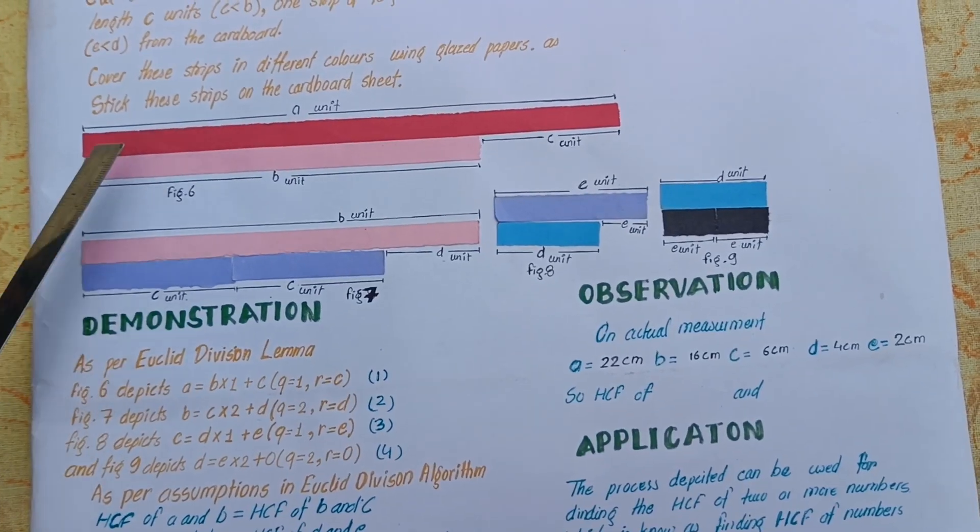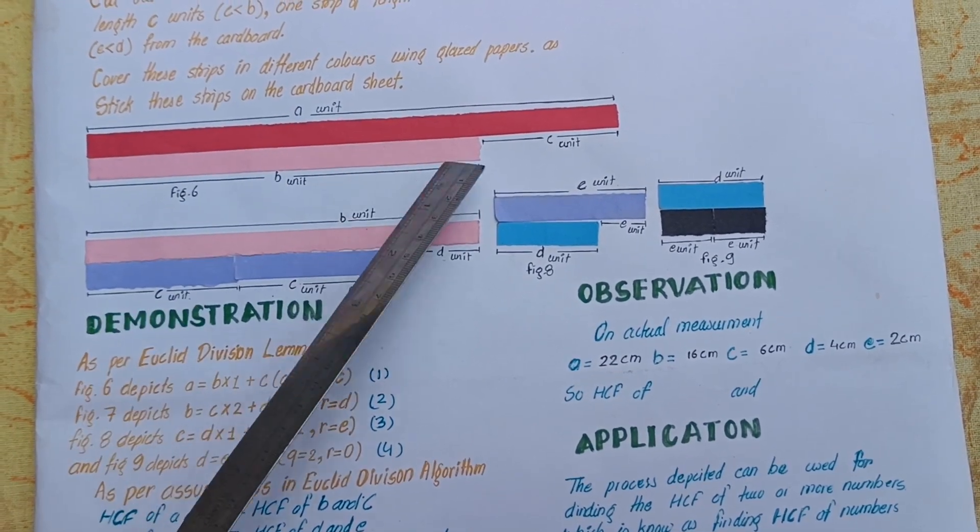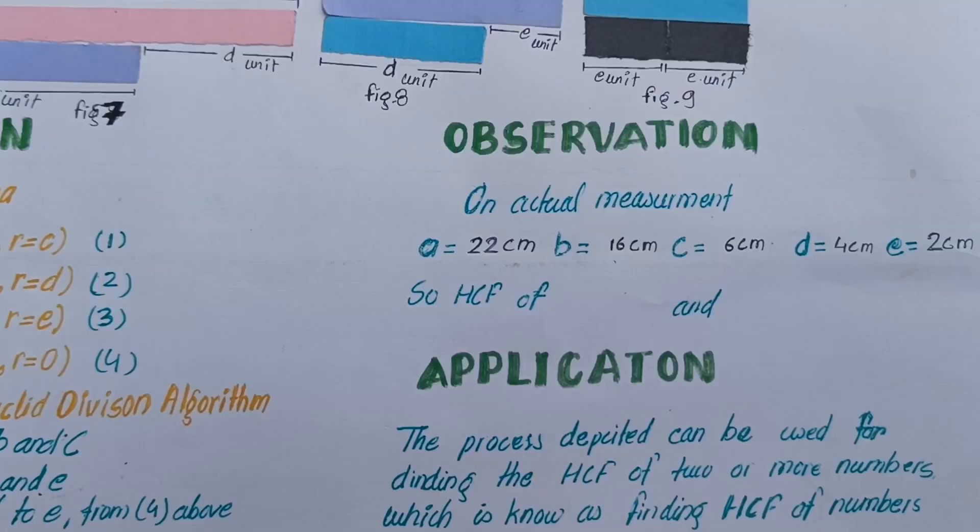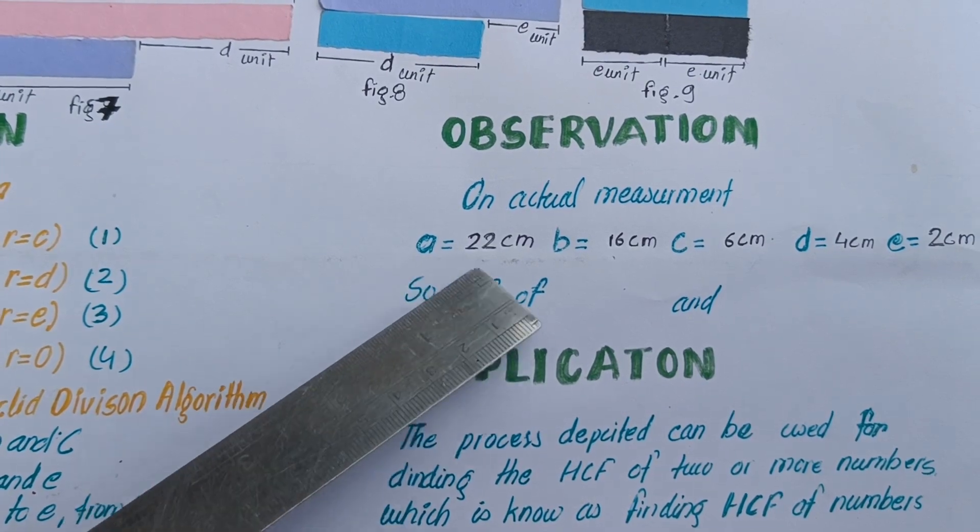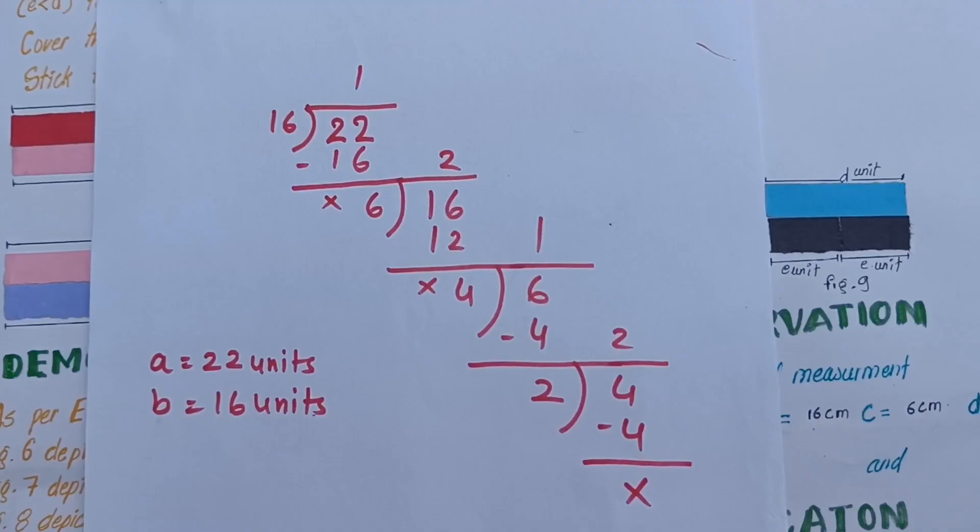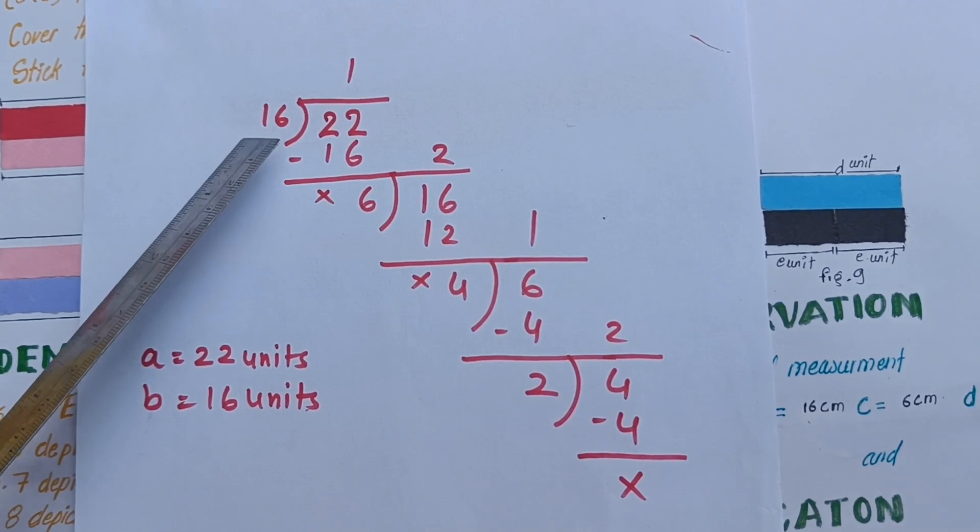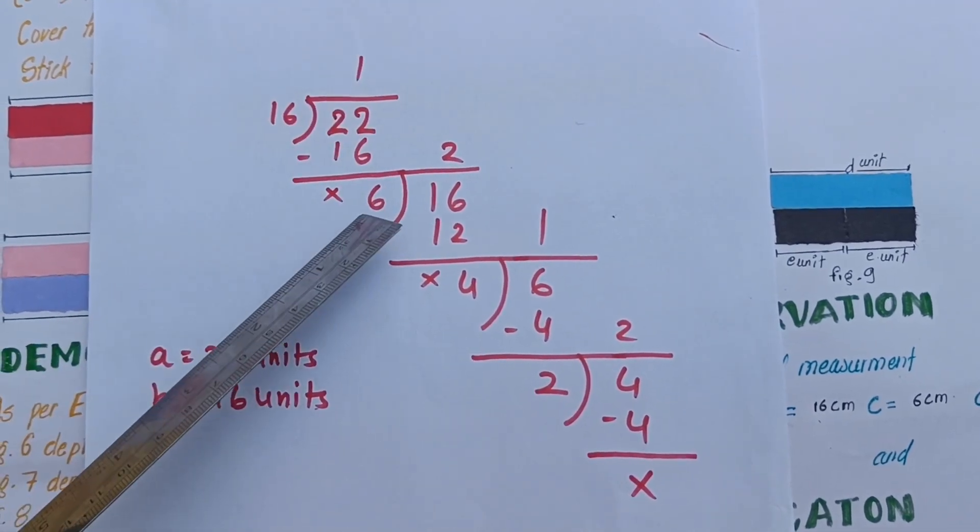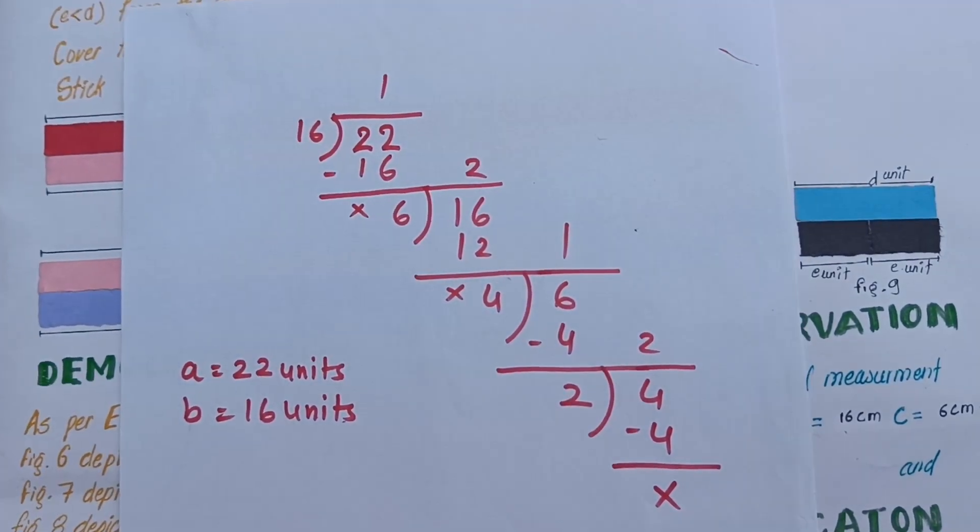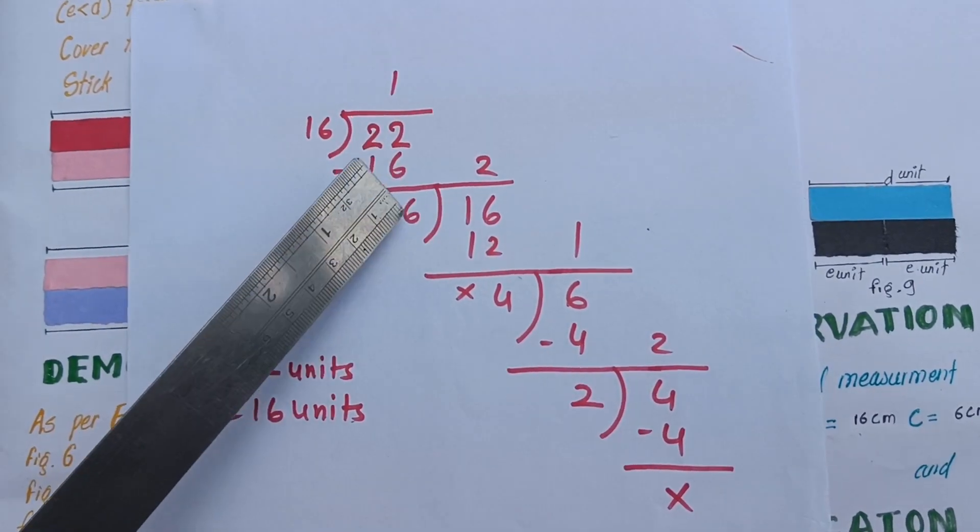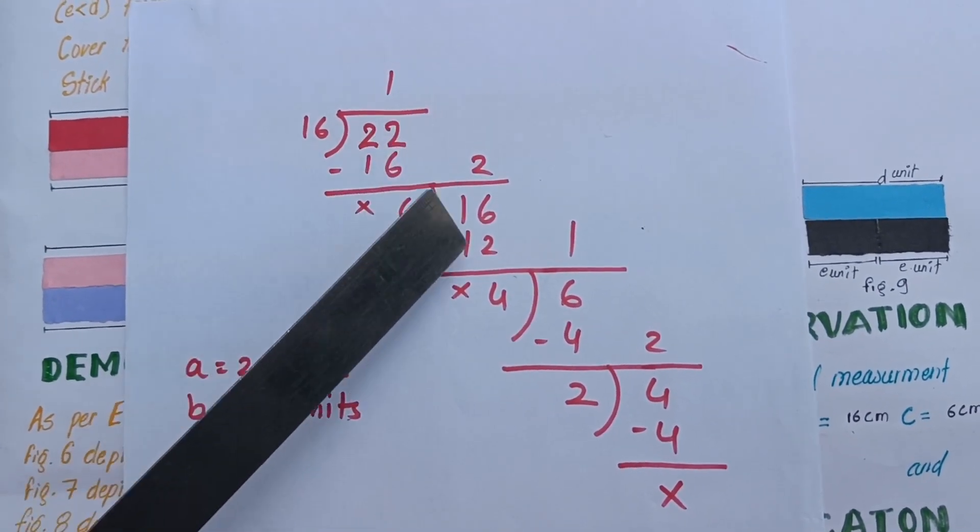Hence, HCF of A and B is E. On actual measurement, A equals 22 and B equals 16. When 22 divided by 16, the quotient is 1 and remainder is 6. In the second step, 16 divided by 6, the quotient is 2 and remainder is 4.